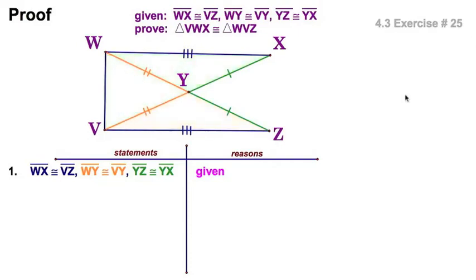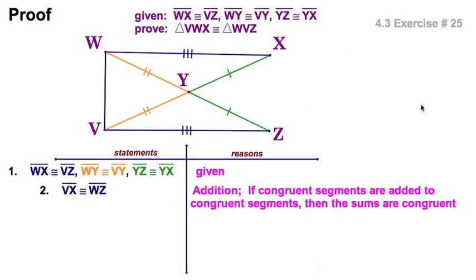So let's see what else we can do to put these two triangles together. I have this piece already. But notice, neither the green nor the orange in and of themselves are a component of the triangle. We would have to add them. And that's exactly what we're going to do. We're going to use the addition theorem to say that one orange and one green is equal to one orange and one green. If congruent segments are added to congruent segments, then the sums are congruent.